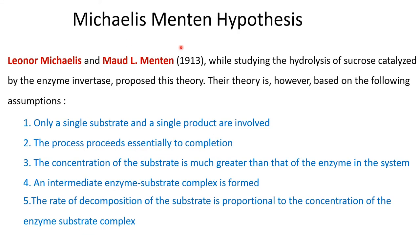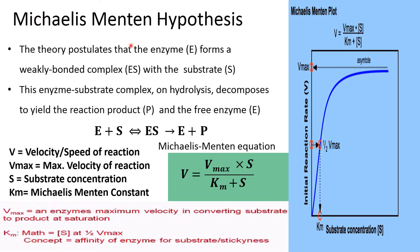The Michaelis-Menten hypothesis was proposed by Michaelis and Menten in 1913 while studying the hydrolysis of sucrose catalyzed by the enzyme invertase. This theory is based on the following assumptions: a single substrate and single product is involved; the process proceeds essentially to completion; the concentration of substrate is much greater than the enzyme in the system; an intermediate enzyme-substrate complex is formed; and the rate of decomposition of the substrate is proportional to the concentration of the enzyme-substrate complex. According to this theory, the enzyme forms a weak bonded complex with the substrate, which on hydrolysis decomposes to yield a reaction product and a free enzyme.